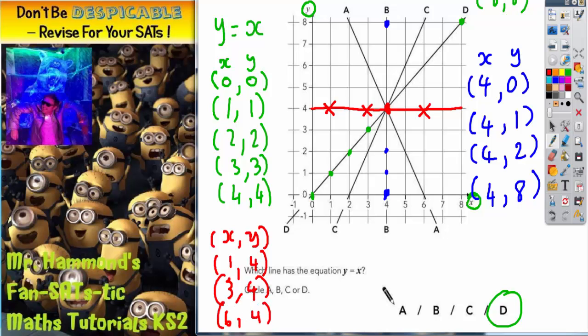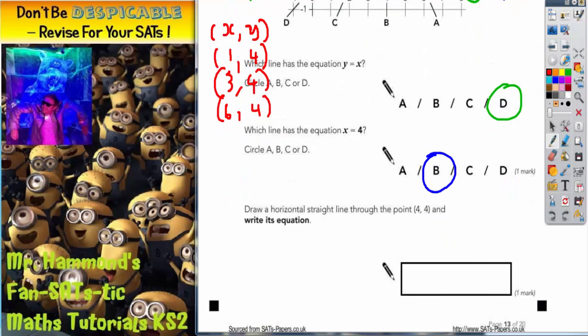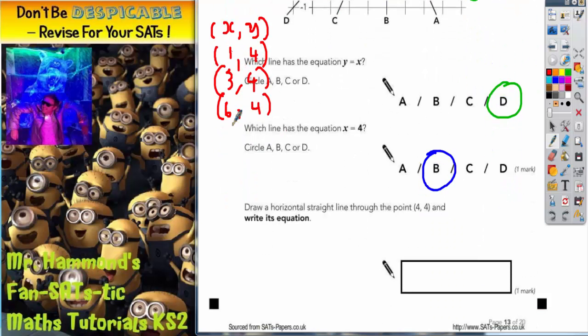Now the question is, what do we notice? Well, the X coordinates are different, but the Y coordinates are always 4. Y is always 4. And if Y is always 4, the name of the equation of the line is Y equals 4. And that's the best thing you can do to explain the equation of that line. The Y coordinates are always 4. Therefore, the name of the line is Y equals 4.